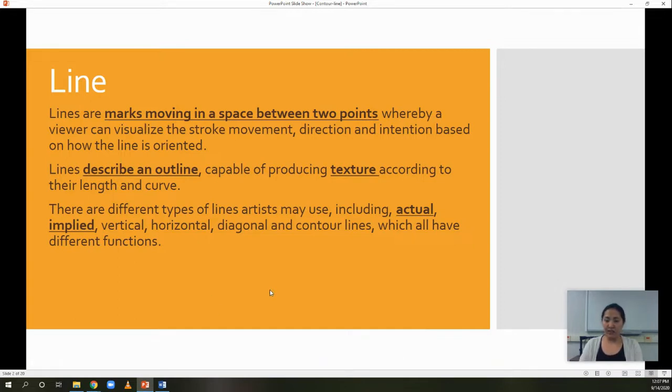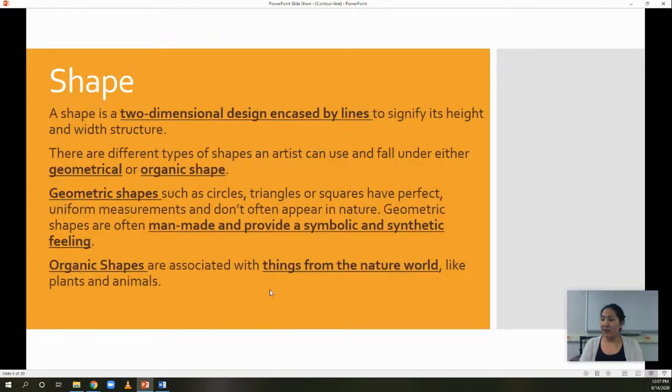And here are definitions of shape. Shape is a two-dimensional design encased by lines to signify its height and width. It's really as simple as circles, squares, or rectangles. And those circles, rectangles are something that we call geometric shapes